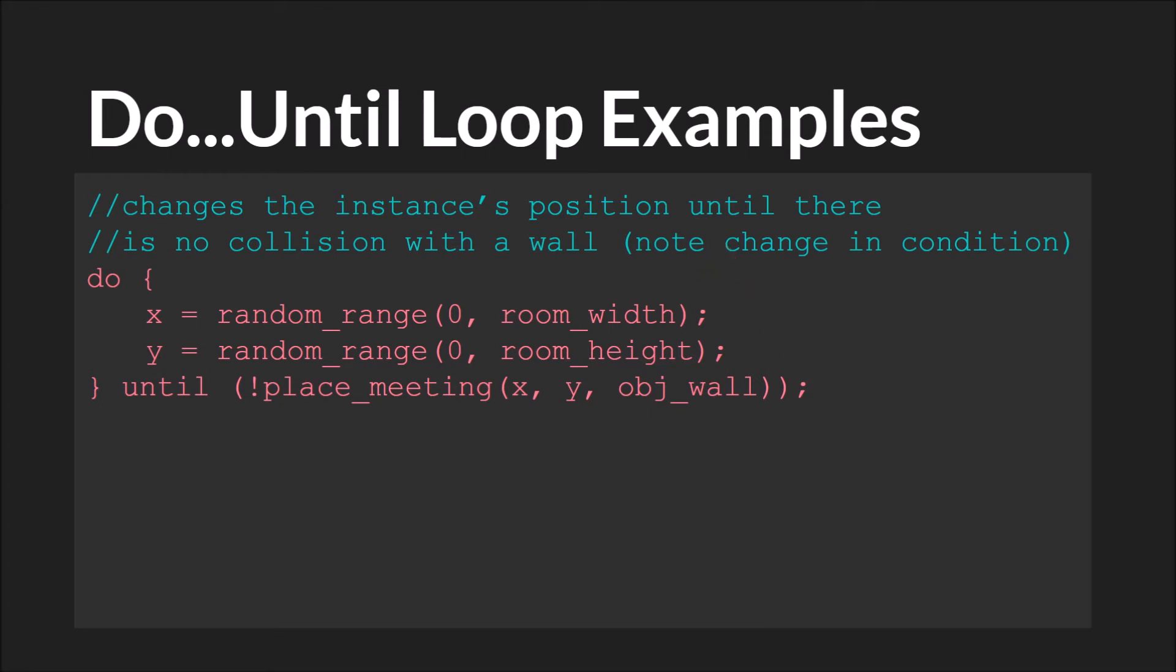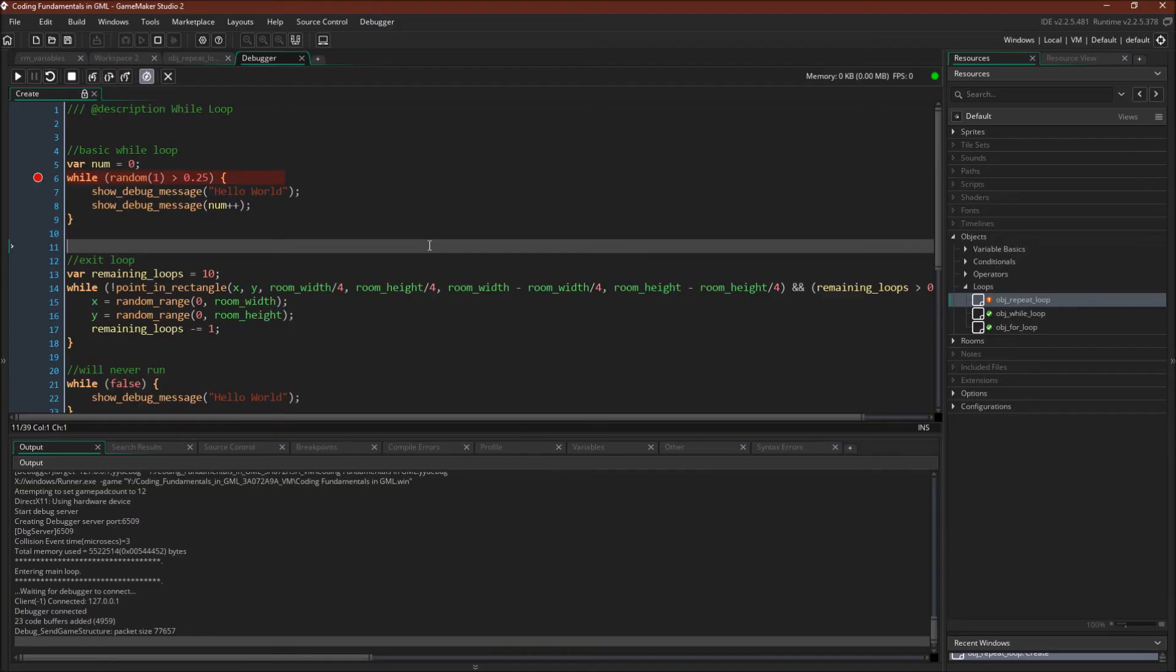Let's switch over to GameMaker Studio 2 for a quick example of both while and do until loops. So, as always, I've set a breakpoint and the debugger has stopped.